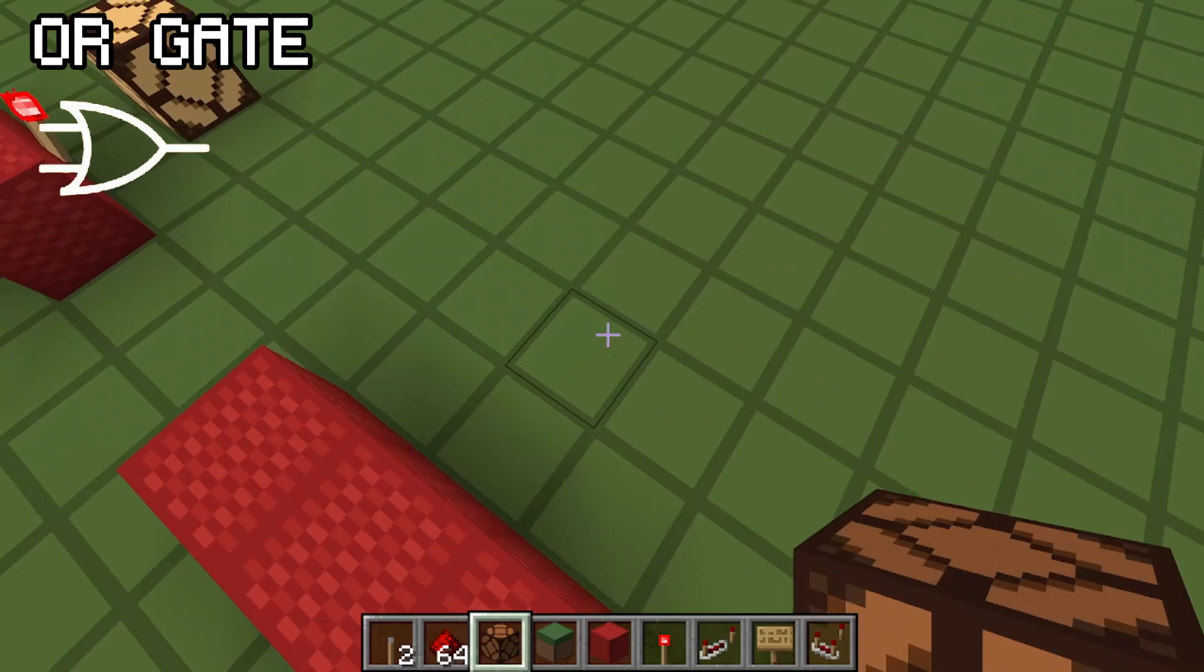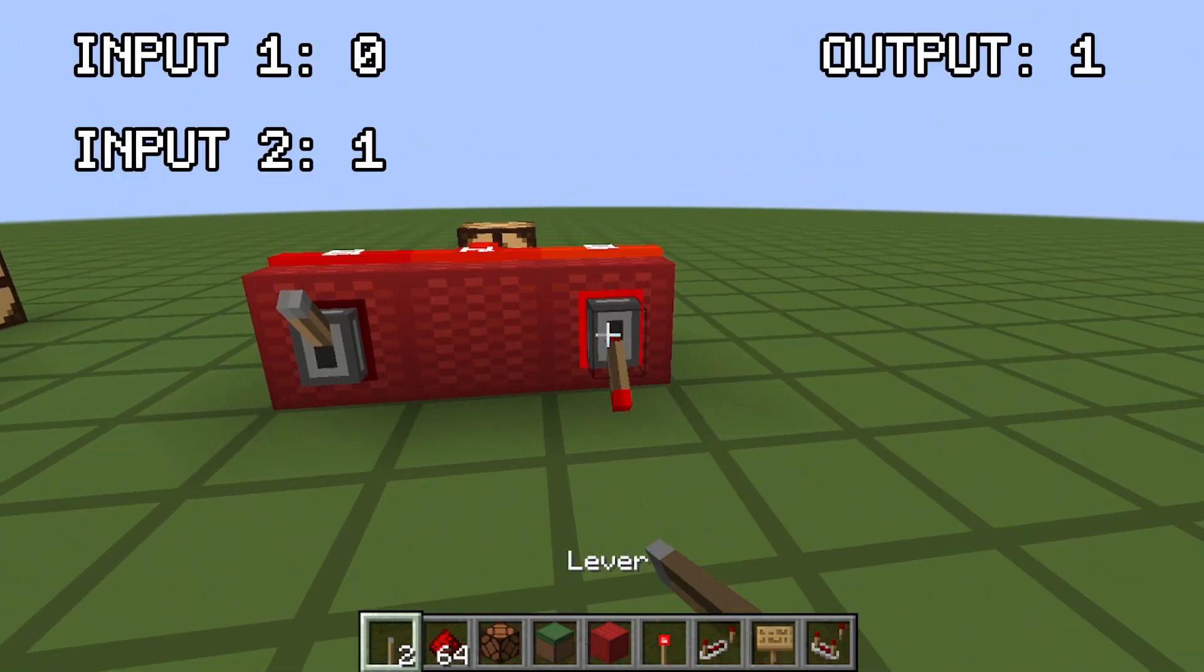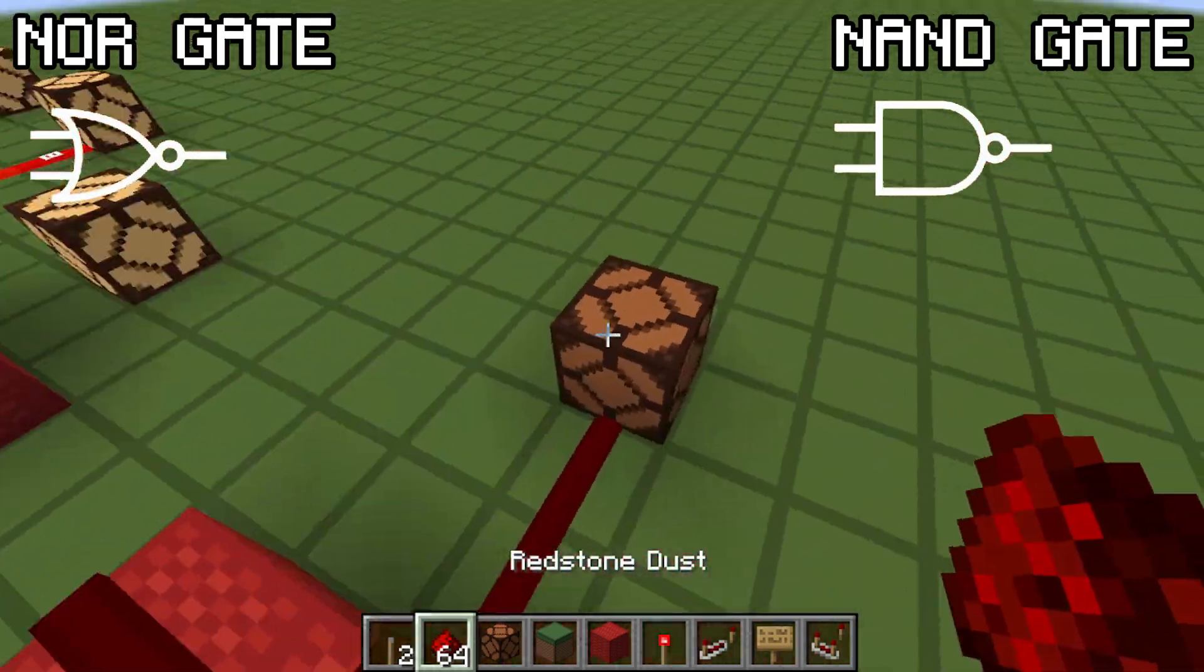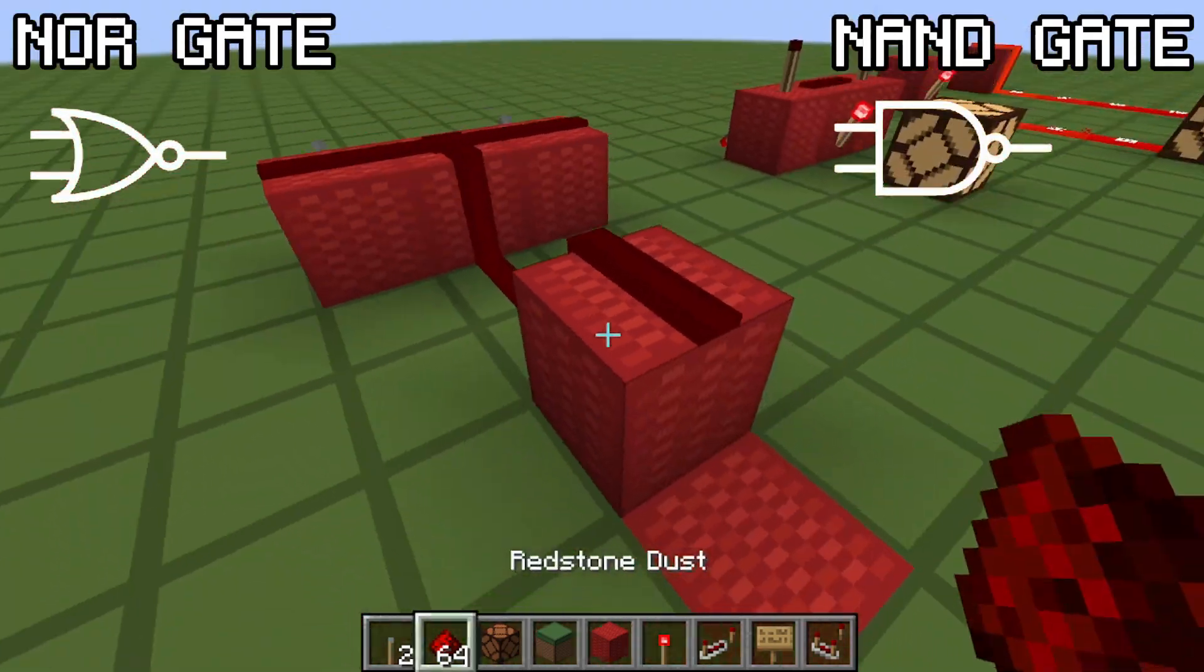The OR gate is very simple, as it outputs one if either lever is on. For the NOR and NAND gates, you just invert the output signal.